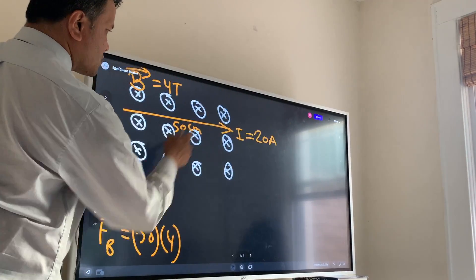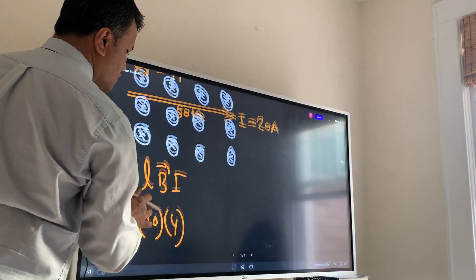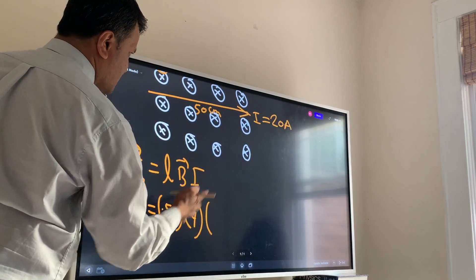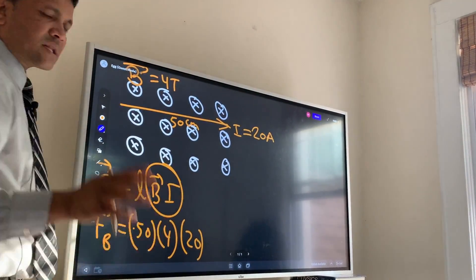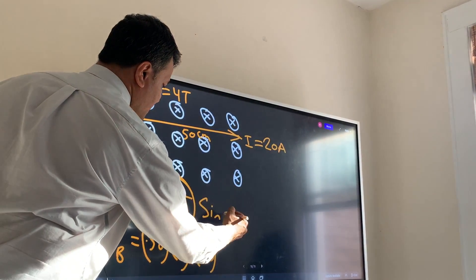And of course we have to have current in the equation. So the current is how much? Let's say 20. And then there is a relationship between magnetic field and current and that is defined by sine theta.